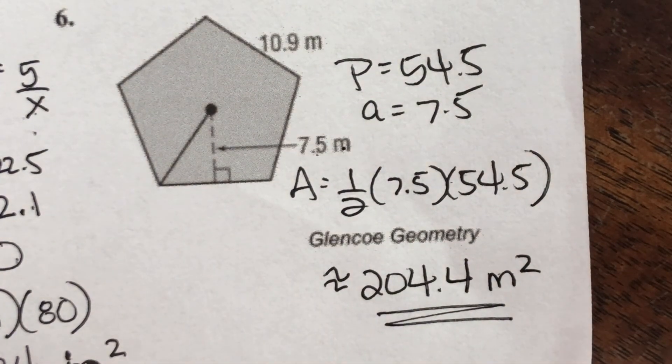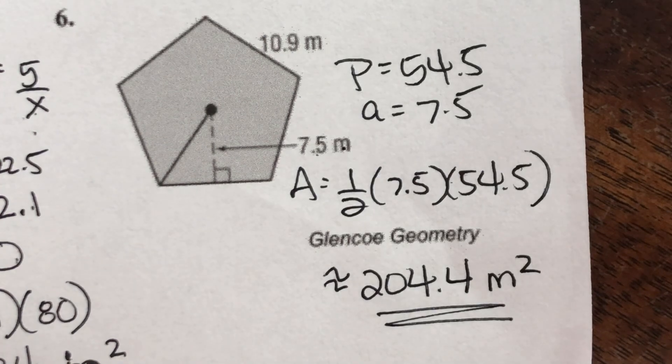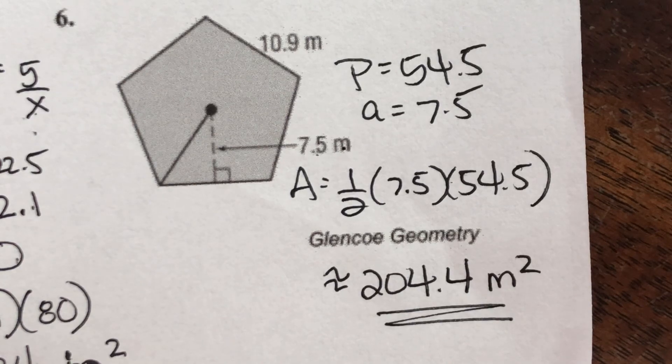Any questions on how to find the area of a regular polygon, how to find the apothem, or how to find the perimeter? You can go back and rewatch this video, and send me questions if you have them.